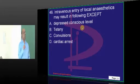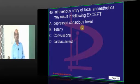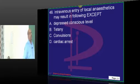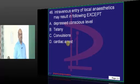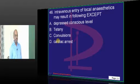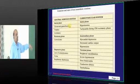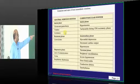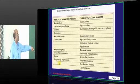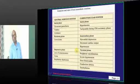If a local anesthetic goes intravenously — which is not expected but can happen with lignocaine or lidocaine — tetany does not occur. Convulsions can occur. The two major effects on CNS and CVS include a depressive phase and an excitatory phase, so convulsions, loss of consciousness, and cardiac arrest can all occur — but not tetany.